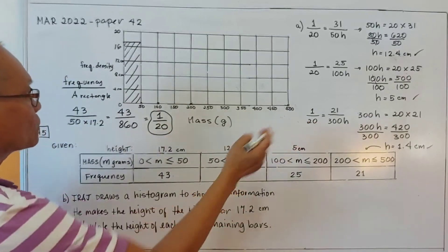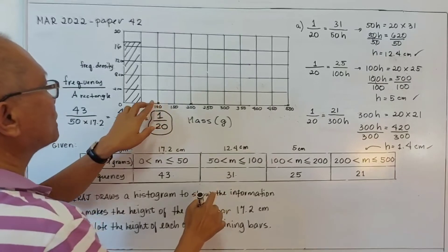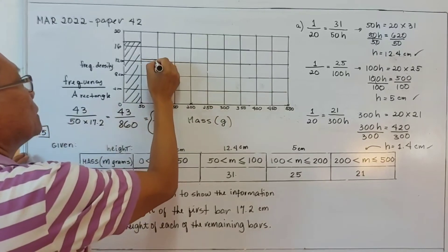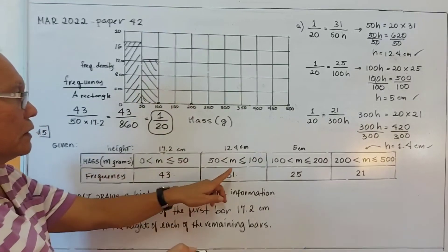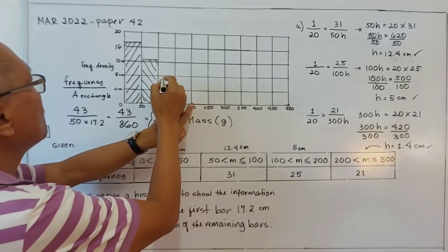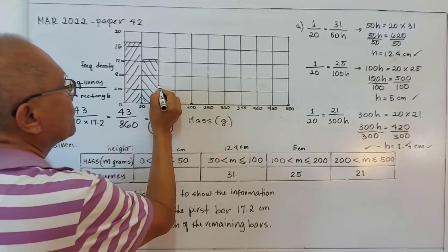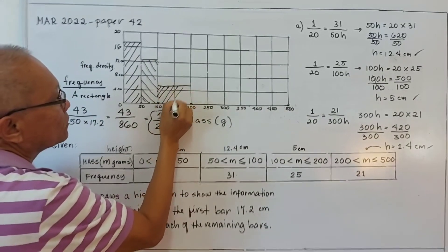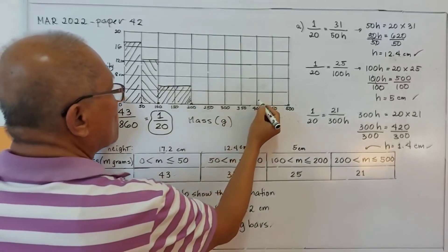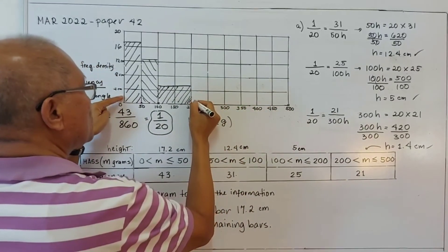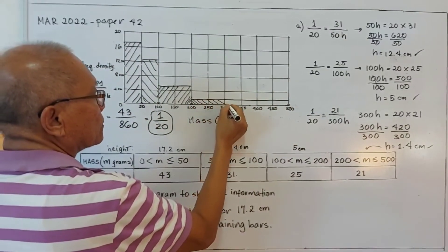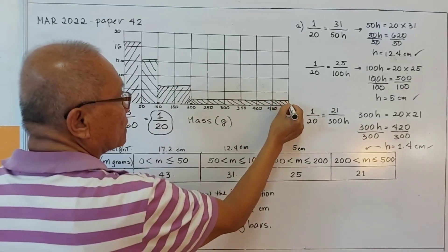So our answers are: the second bar (50 to 100) has height 12.4cm, plotted approximately here; the third bar (100 to 200) has height 5cm, plotted here; and the last bar (200 to 500) has height 1.4cm, plotted here. This type of chart is called frequency density or a histogram.